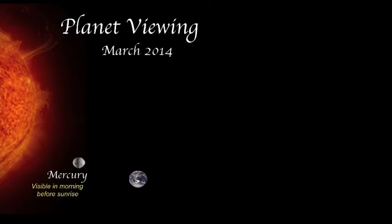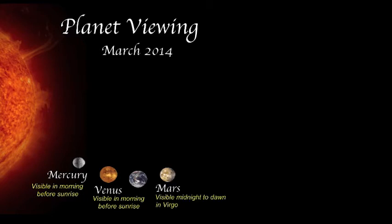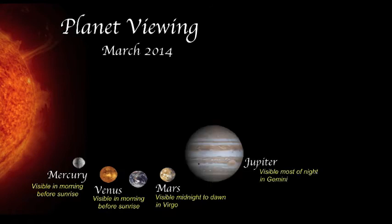Mercury will be in the morning sky just before sunrise. Venus will be in the morning sky starting a few hours before sunrise. Mars will be in Virgo, you can see it all night starting around midnight. Jupiter is in Gemini, visible almost all night.